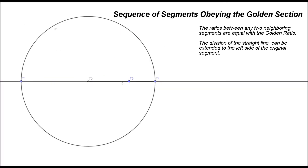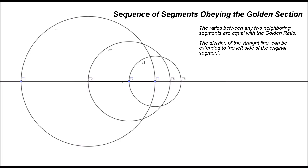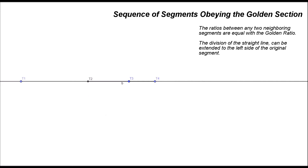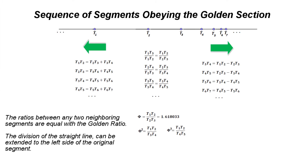Let's extend the original segment in both directions indefinitely, and form a straight line. Next, let's extend the division into the extreme and mean ratio to the neighboring segments on the right side of the original segment. This can be done easily by imagining multiple circles of ever-decreasing radius intersecting the straight line. The intersection points form segments on the line. It can be proven that all the ratios between any two neighboring segments are equal with the golden ratio. Using a similar approach, the division of the straight line can be extended to the left side of the original segment, so one can imagine the complete line divided into segments related to each other by the golden section ratio.